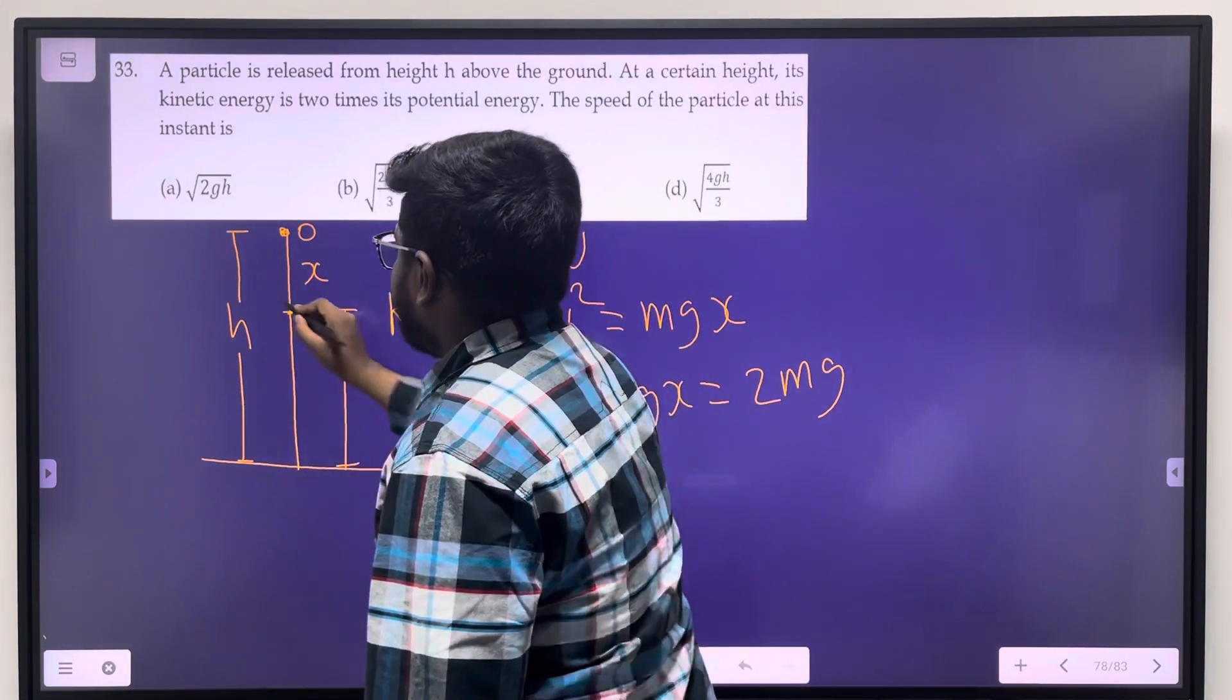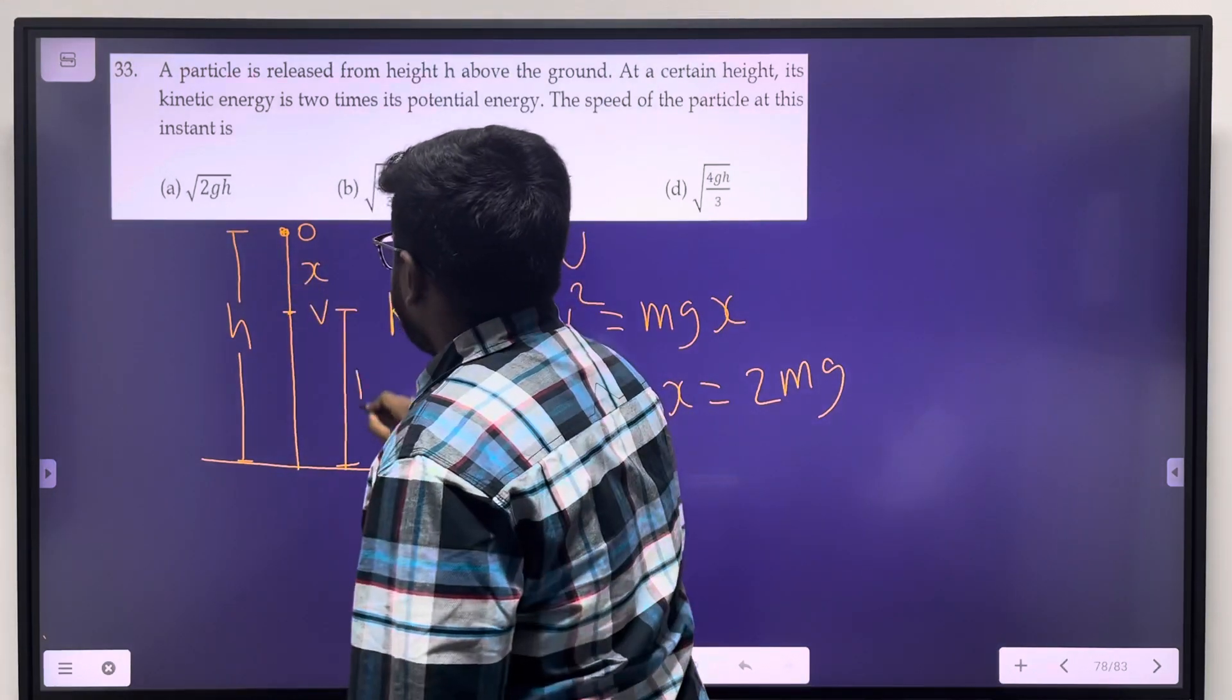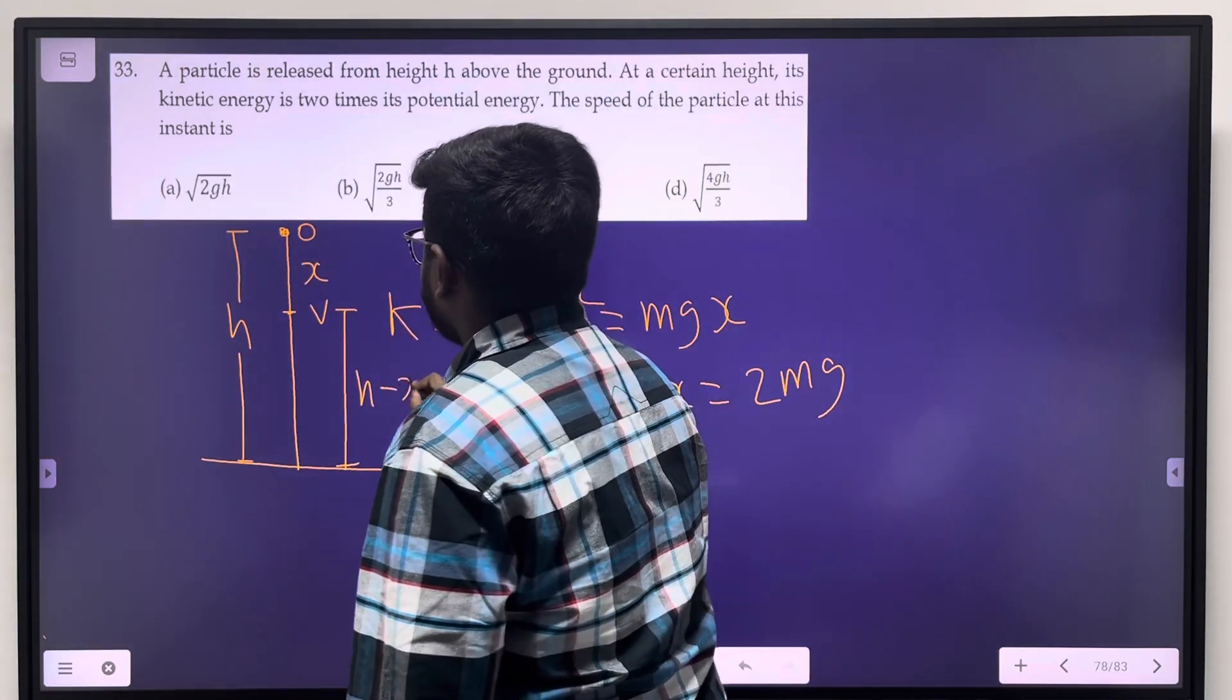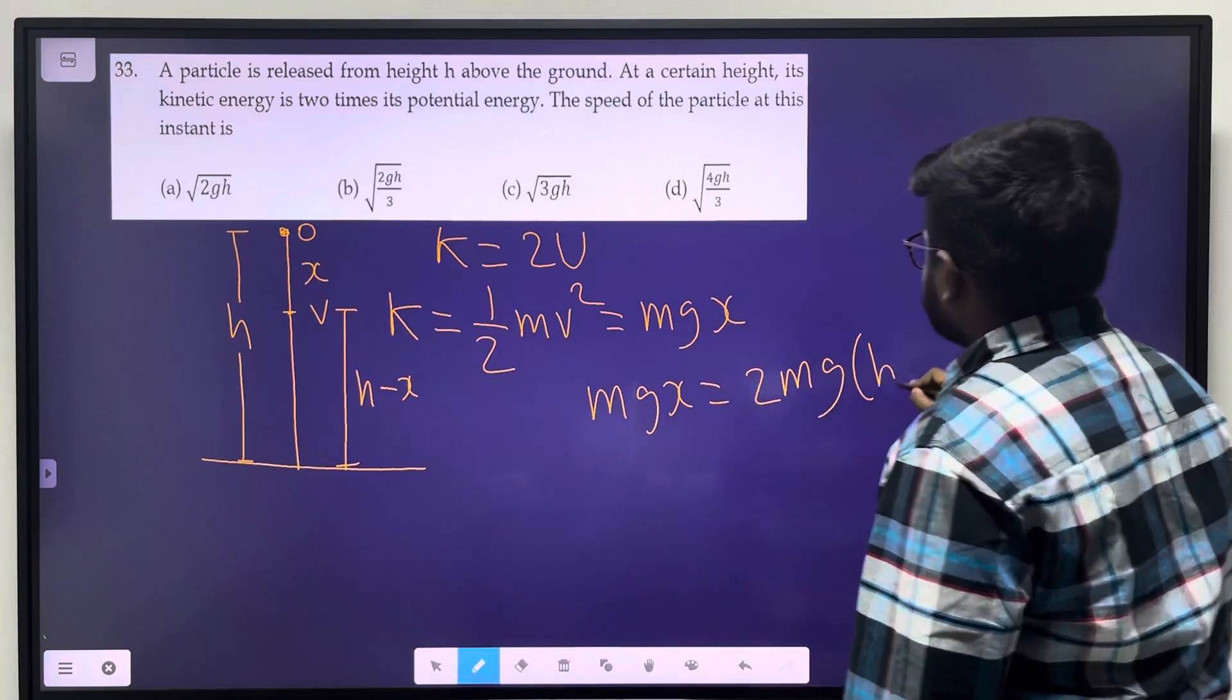From ground, if total height is h and x distance is traveled, remaining height is h minus x.